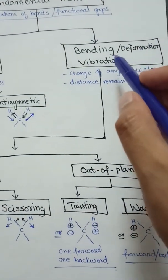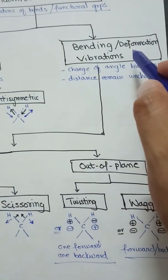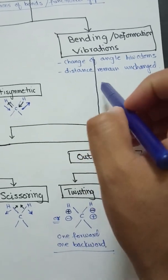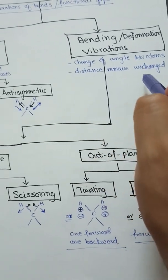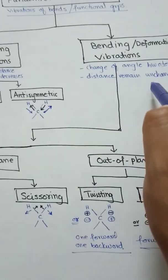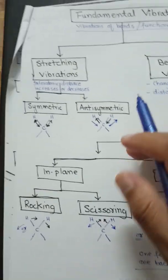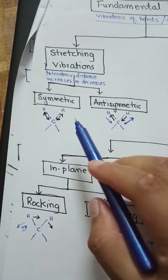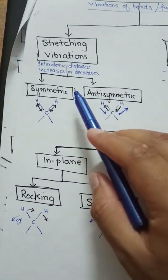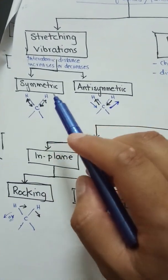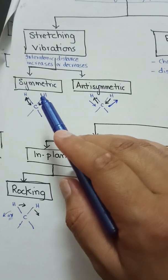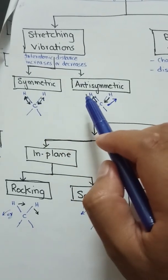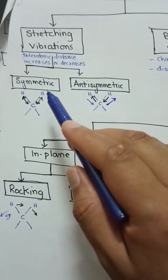In stretching vibration, the interatomic distance increases or decreases, and it is of two further types: symmetric and anti-symmetric. In bending vibrations, the change of angle occurs but the distance between different atoms remains the same.